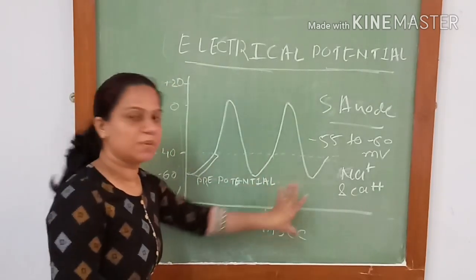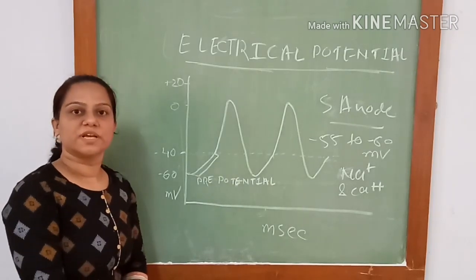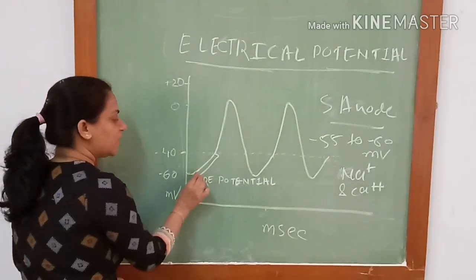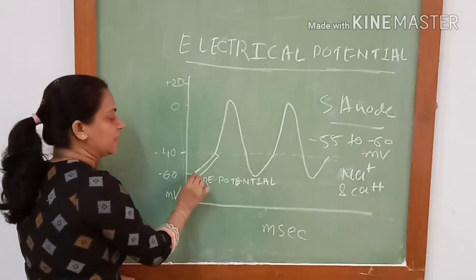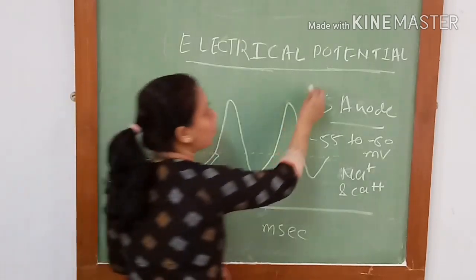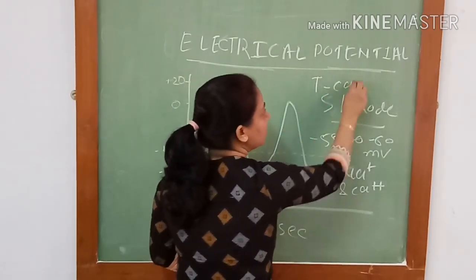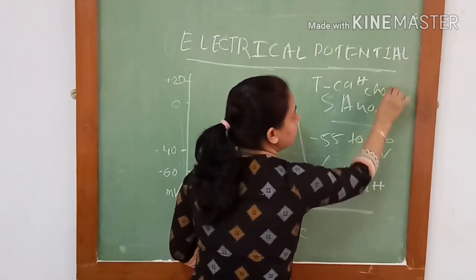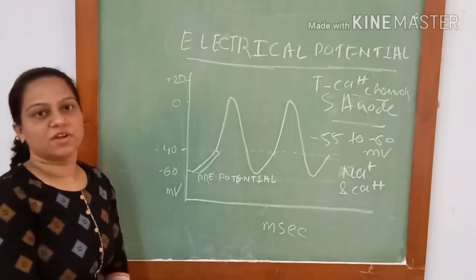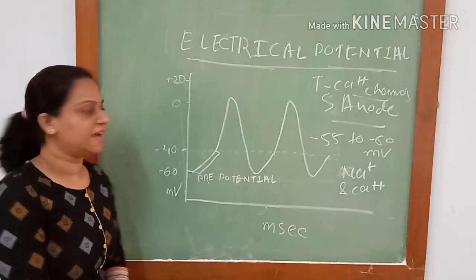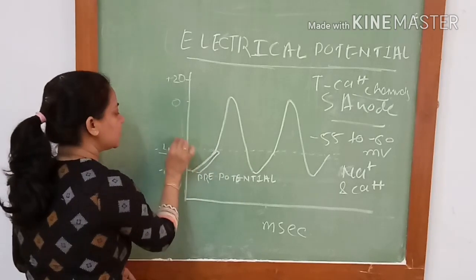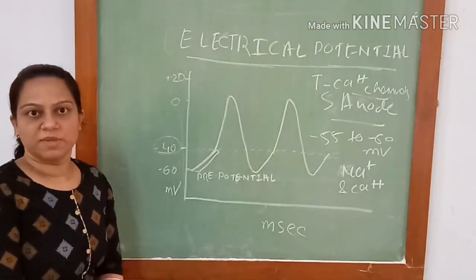This is the graphical representation of electrical potential in pacemaker tissue. Due to entry of sodium ions inside the cell, there will be an initial part of the pre-potential. Later, there will be opening of transient calcium channels which causes entry of calcium ions inside, forming the later part of the pre-potential and bringing the membrane potential to around minus 40 mV.